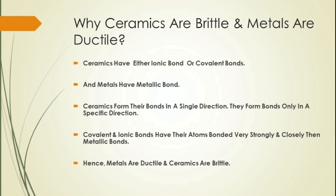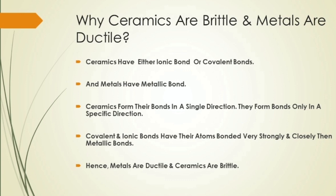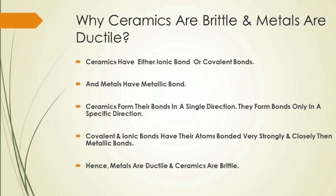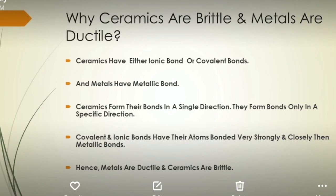Sabse pahle dekhte hain: why ceramics are brittle and metals are ductile. Ceramics brittle isliye hote hain kyunki ceramics ke andar either ionic bond ya covalent bonding hoti hai. Jo bhi ceramic materials ki properties hoti hain, woh sari properties dictated hoti hain by the types of atoms present, the types of bonding between the atoms, and the way the atoms are packed together.